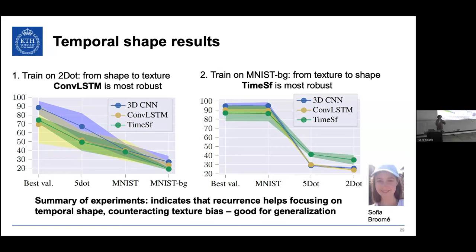That is good for generalization. What is really important in a video sequence is to understand what is going on — the motion — and modeling the motion in the sequence. Of course, you would like to take texture into account when it is also indicative of what is happening, but the system should not be completely led astray by texture information, because when you then change domain, it will generalize less well.